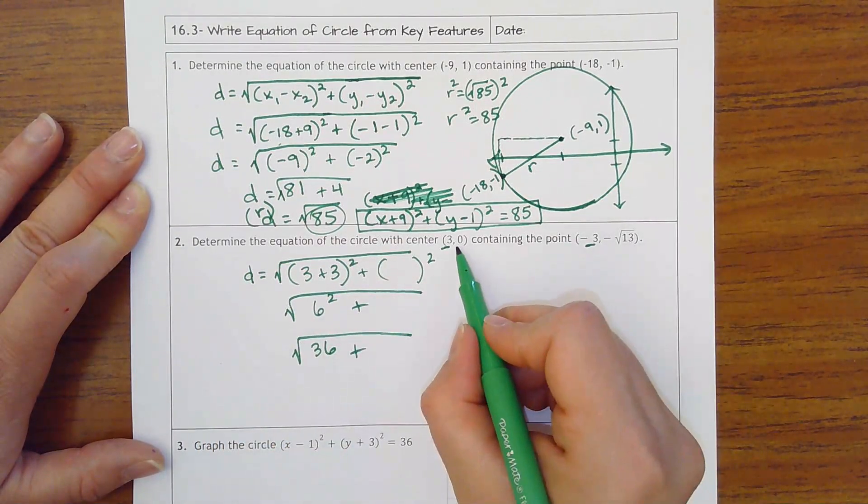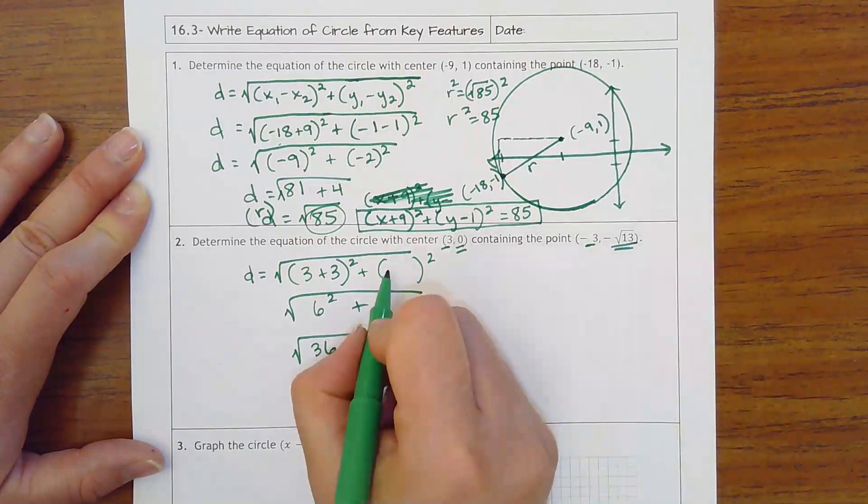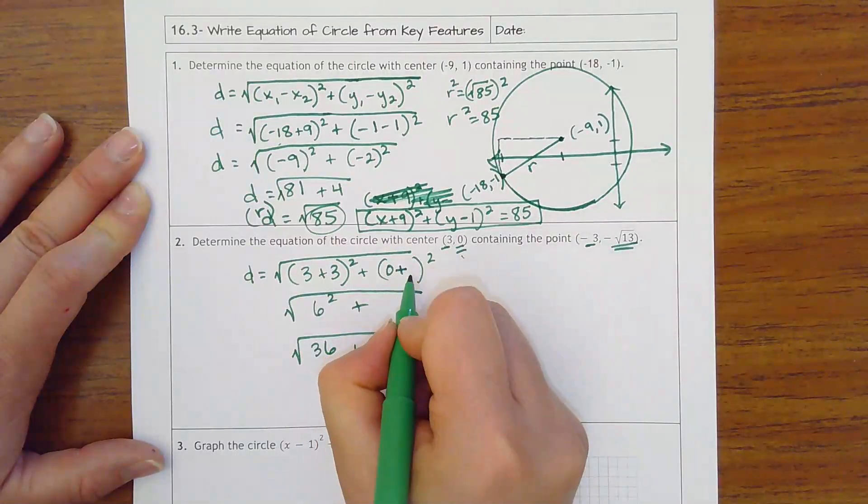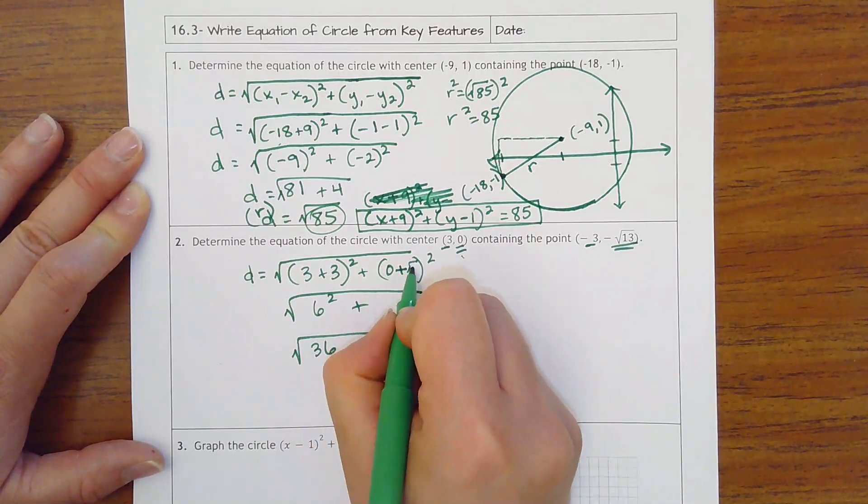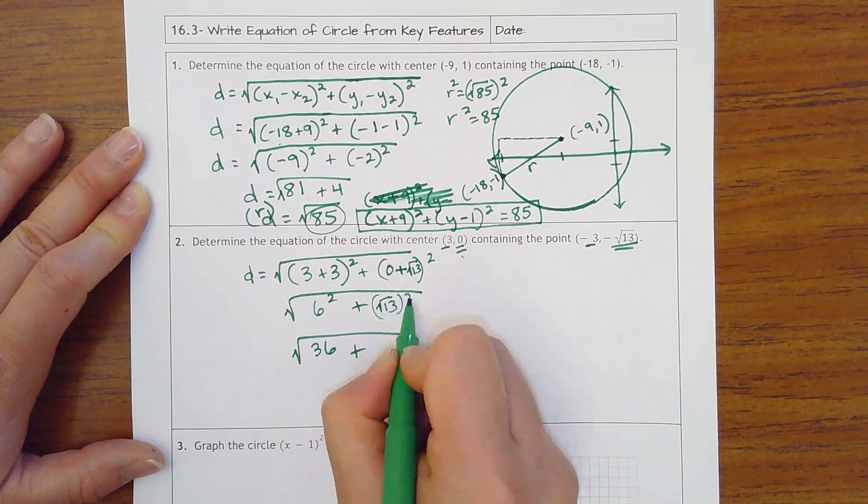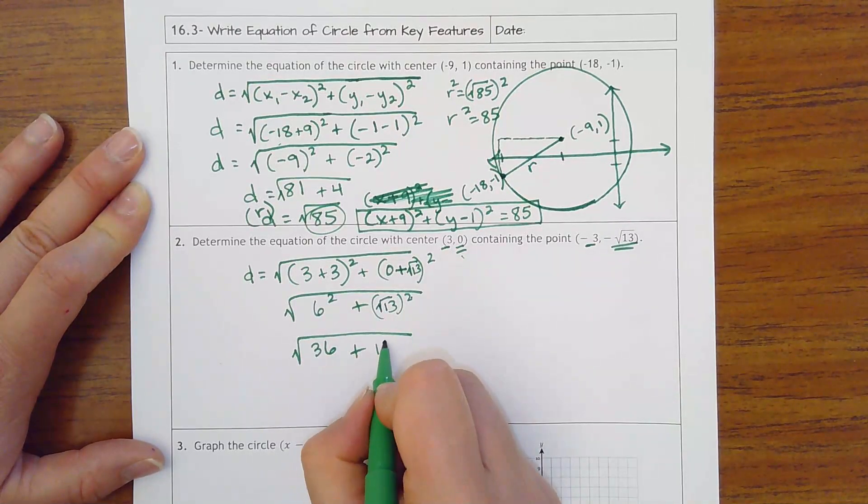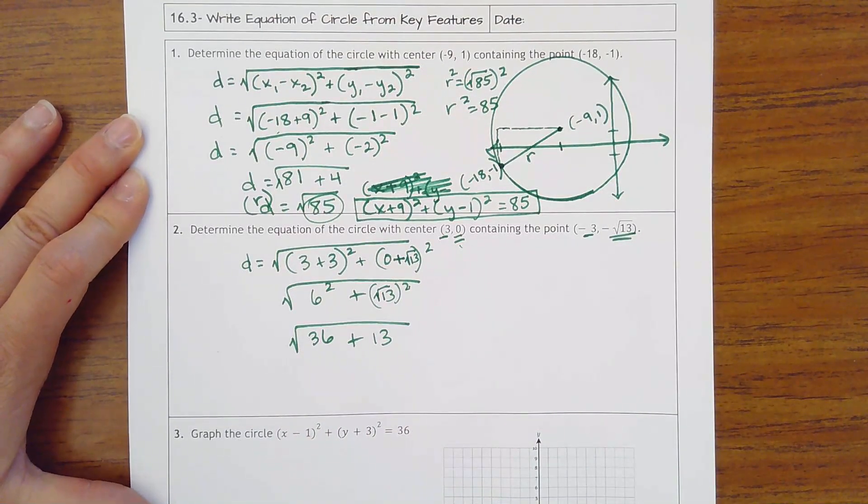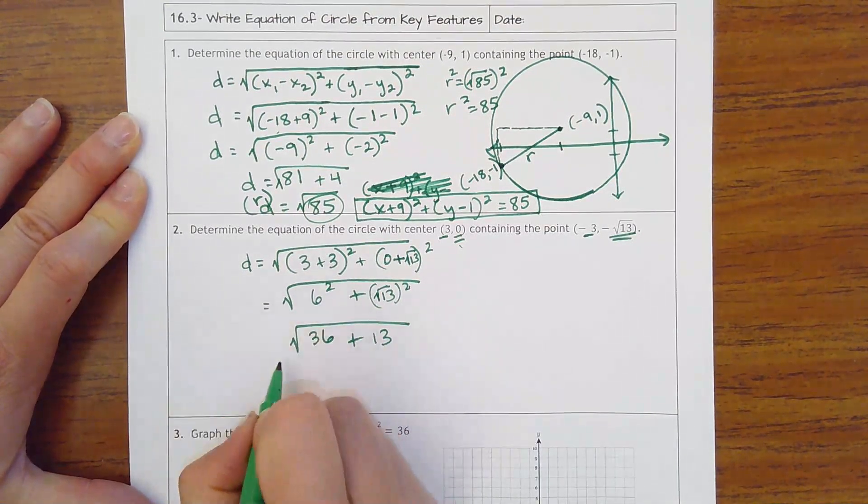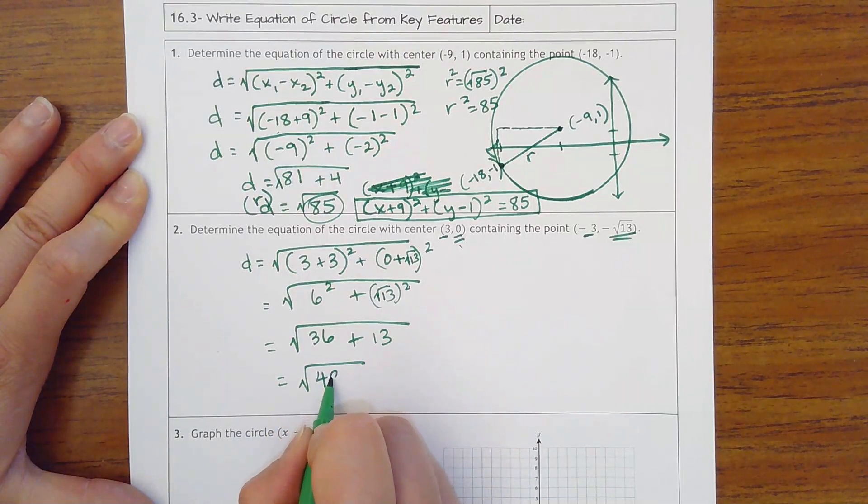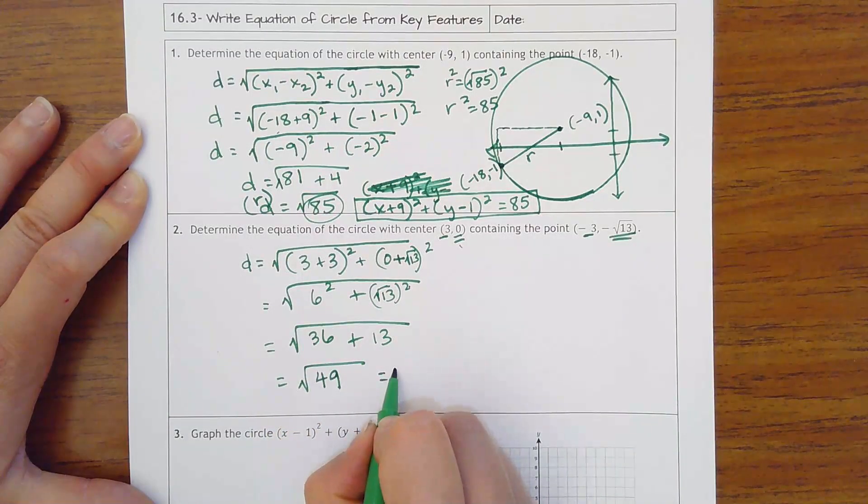Okay, then y's: 0 minus negative square root of 13, that'll be plus square root of 13. 0 plus square root of 13 is still square root of 13. Squaring a square root, they cancel, so that's just 13. Do not square the 13 because you're squaring a square root, they cancel. Add that together and you would get 49. Square root of 49 is 7.